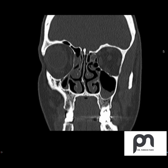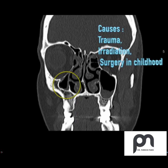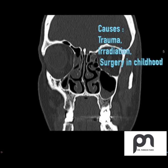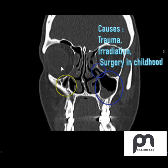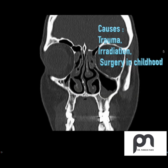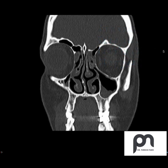The causes of maxillary sinus hypoplasia can be trauma, infection, surgery in childhood, or irradiation. If someone has cancer in the pediatric age group and receives radiation at that time, these structures will not develop. It is also seen in congenital deformities and syndromes like Treacher-Collins syndrome, in which it is associated with unilateral maxillary sinus hypoplasia.